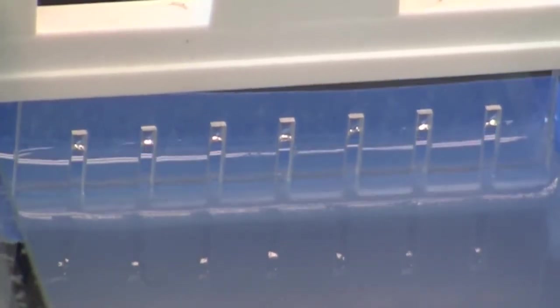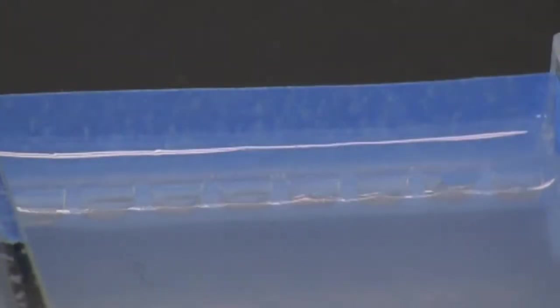When the gel is cooled and opaque, remove the comb by pulling it gently straight up and out of the wells. You should be able to see that each well is well formed. If the comb is removed before the gel is set, the wells will collapse.